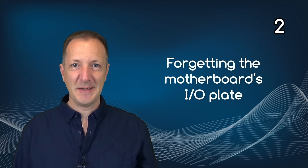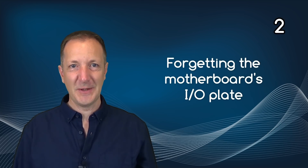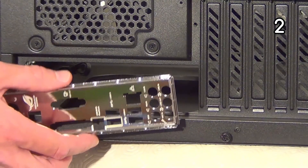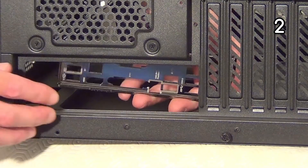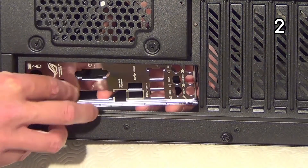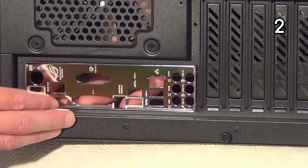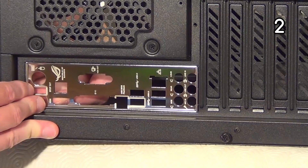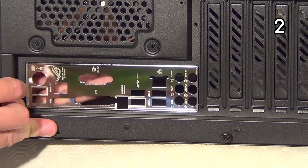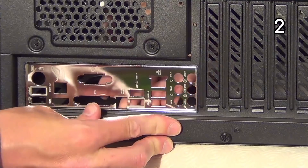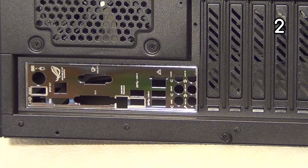Number two: forgetting the motherboard's IO plate. With just about every motherboard there will be an IO plate that comes with it, which should be installed into the computer case before installing the motherboard. Those that forget to put this plate in first will have to take the motherboard out, install the IO plate, then reinstall the motherboard. So just remember to install the plate first.